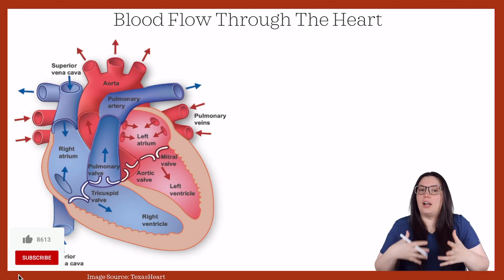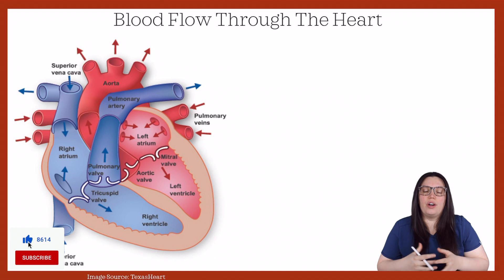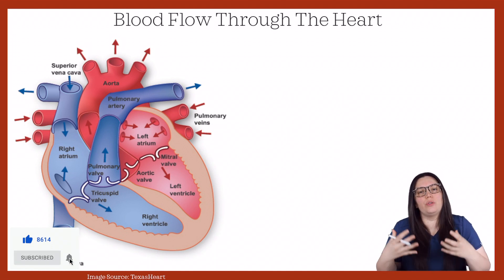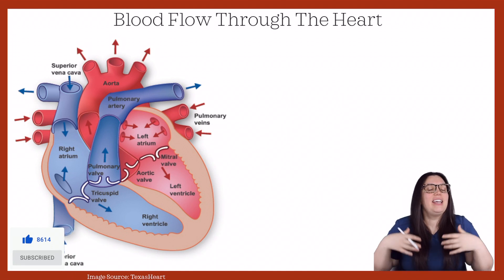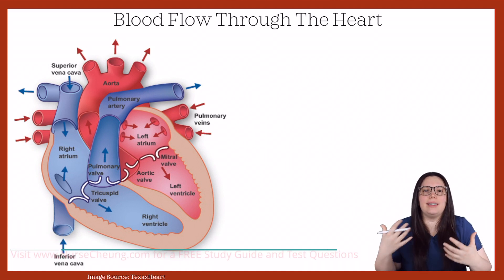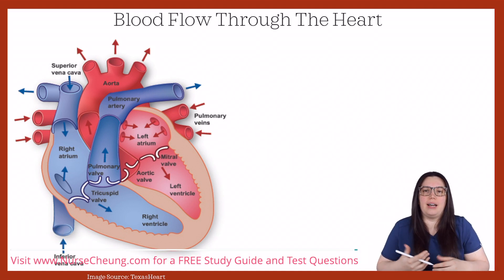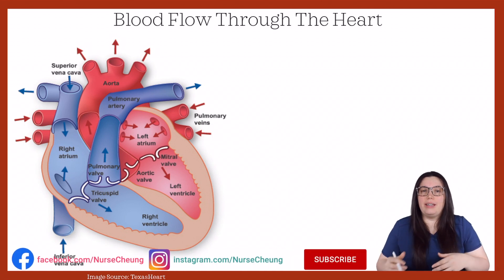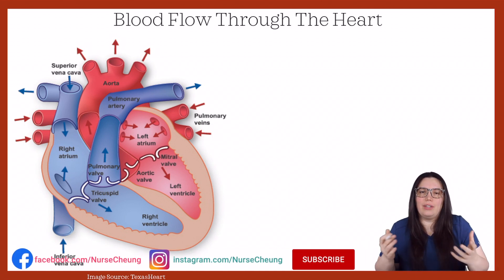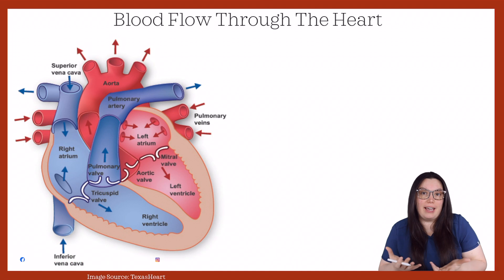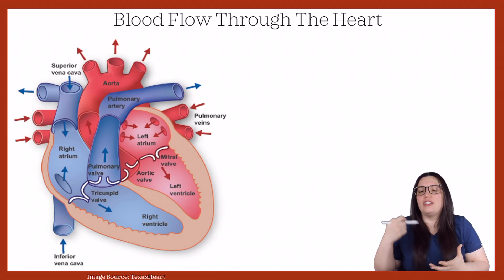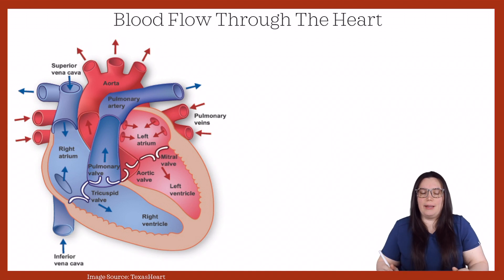Before we begin talking about how blood circulates through the heart, it's really important to understand that when it comes to our systemic circulation, it's really a continuous system that occurs throughout the body. There's really no start or stop point. It doesn't begin somewhere — it's kind of like the 'what came first, the chicken or the egg' conversation. It's just this constant circulation cycle occurring throughout the body.